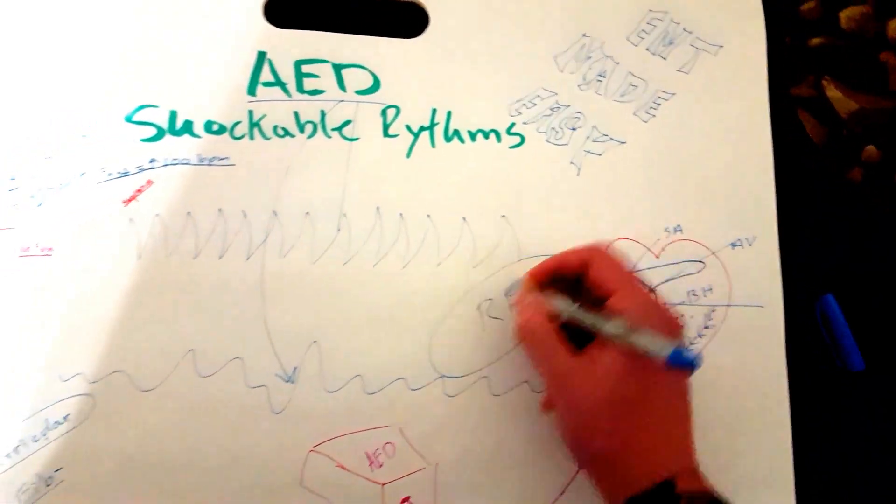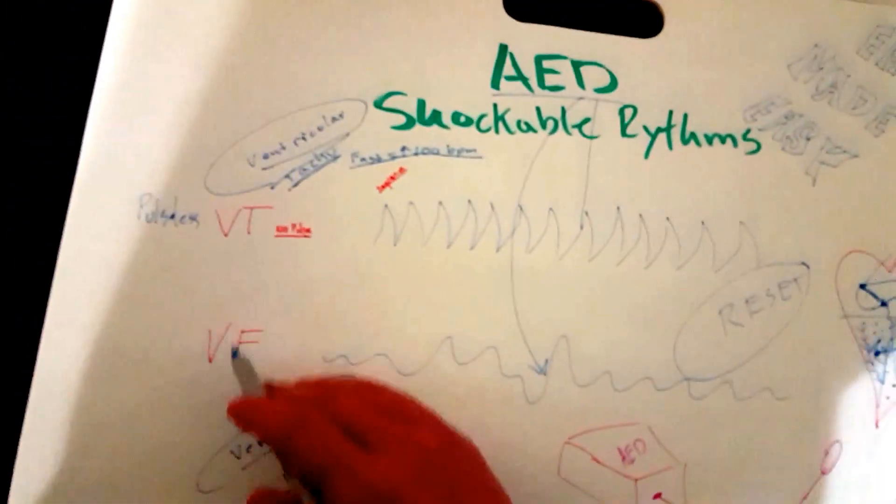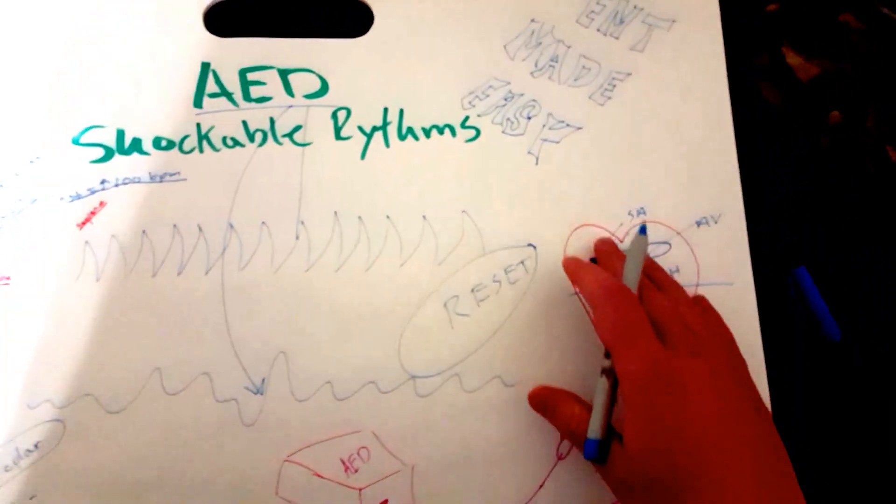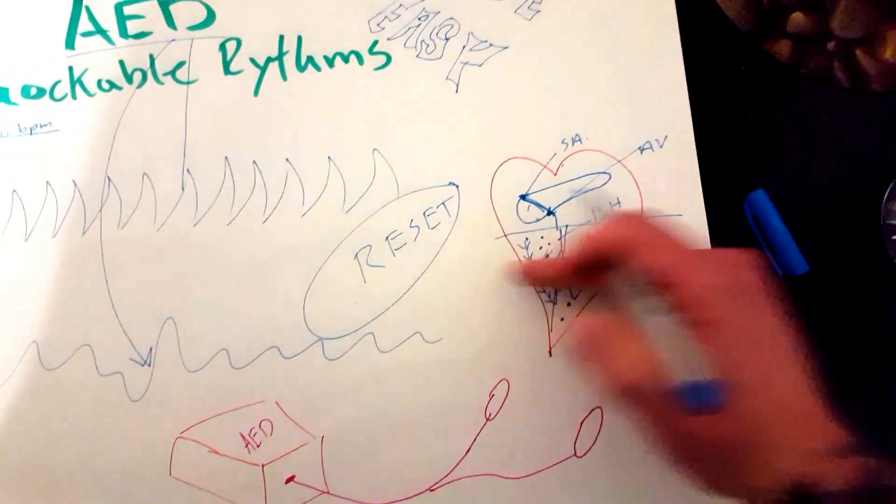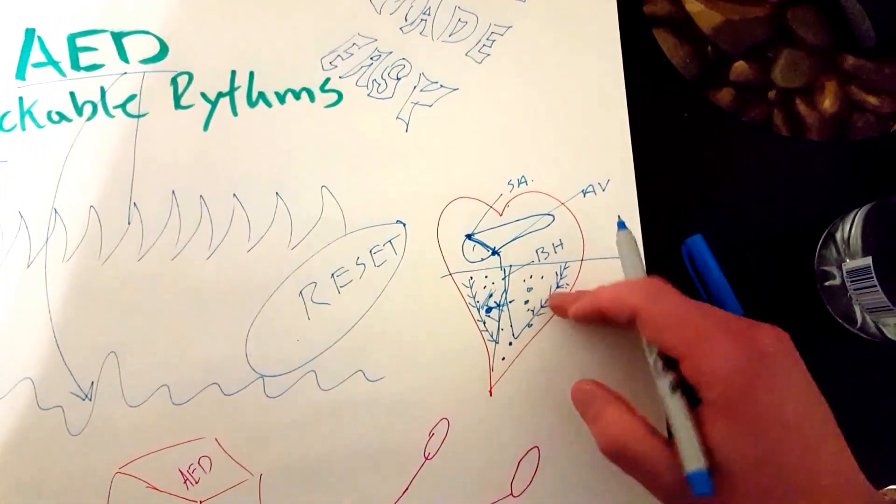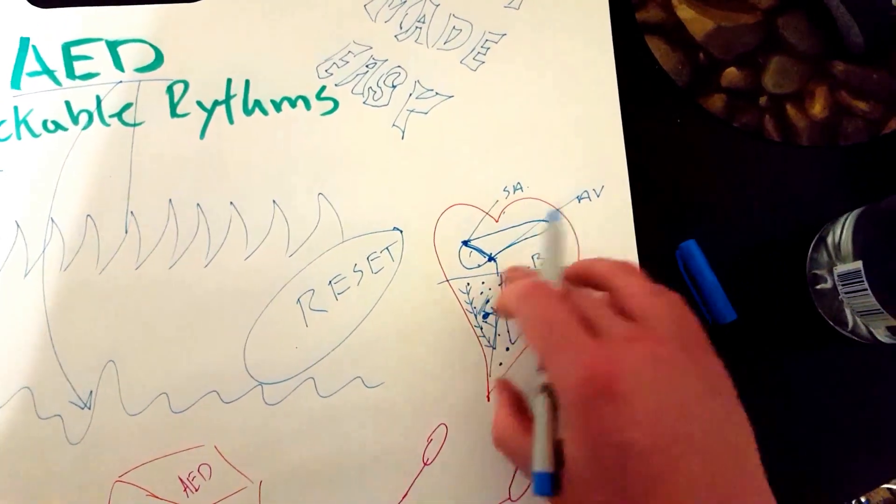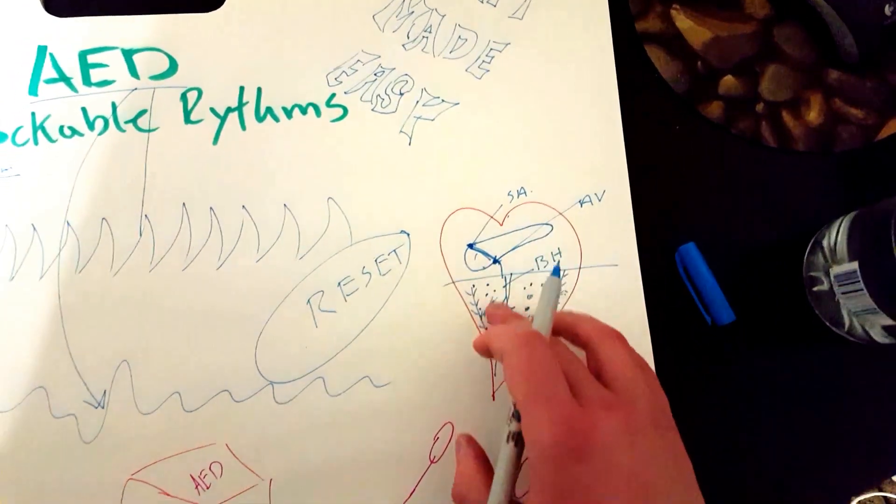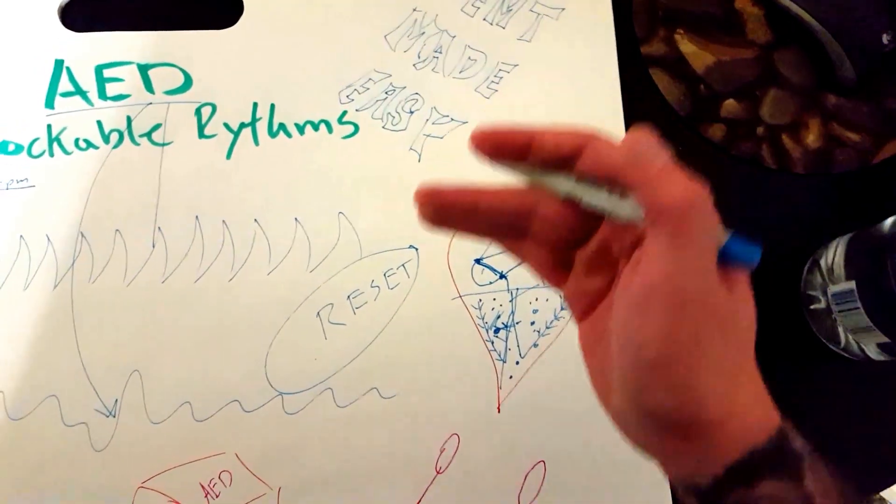So an AED is like the reset button for the heart. If it's going through VTAC or VFib, it's going to send that signal, and hopefully it will eliminate, so it's going to take this dysrhythmia away. It's going to take these away and let this normal sinus rhythm get back on track.